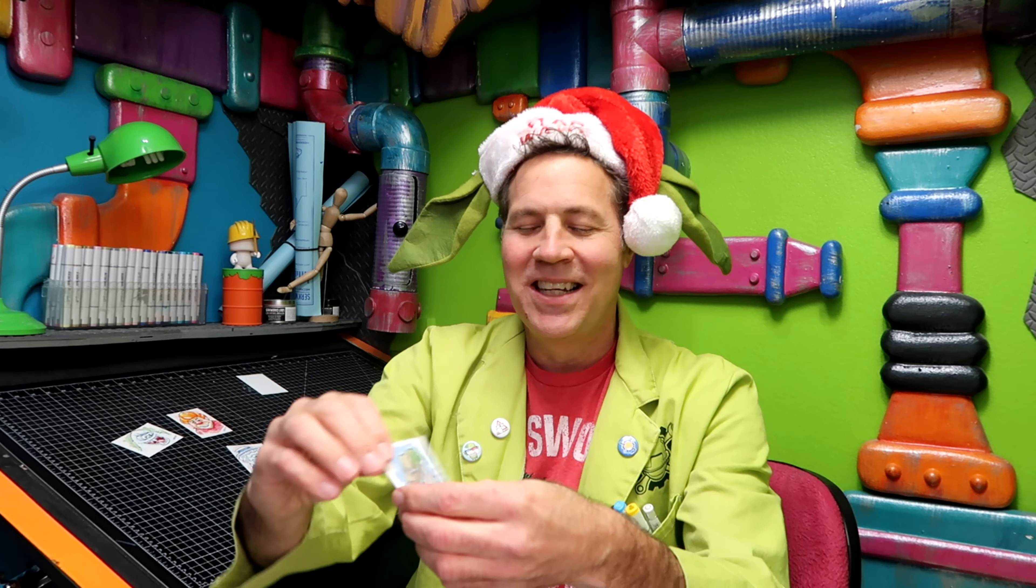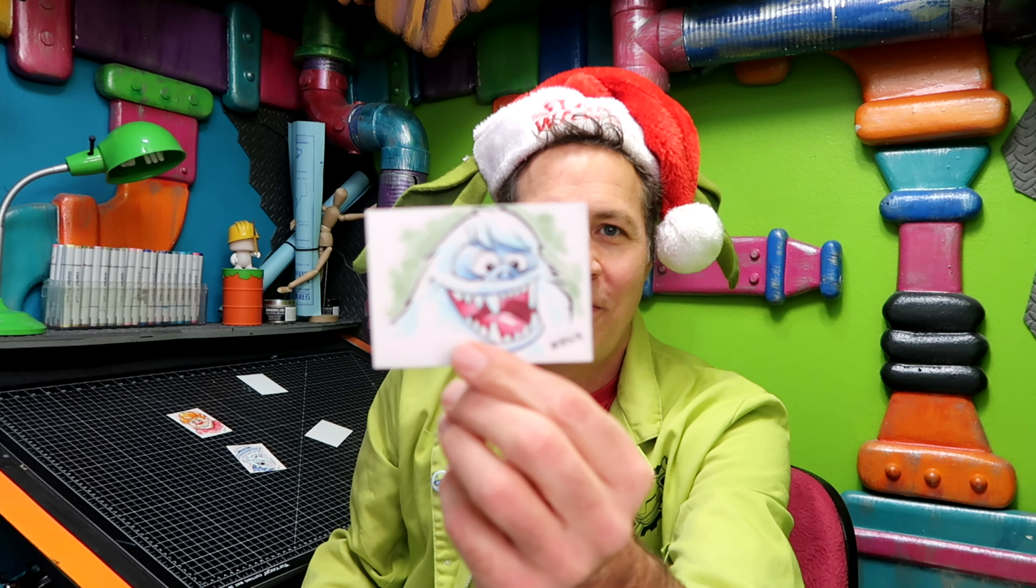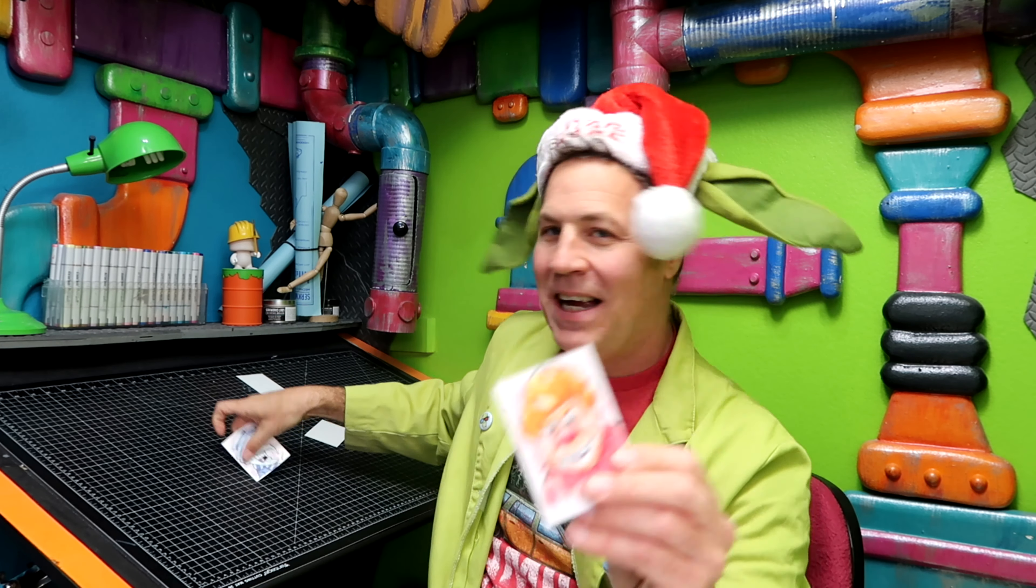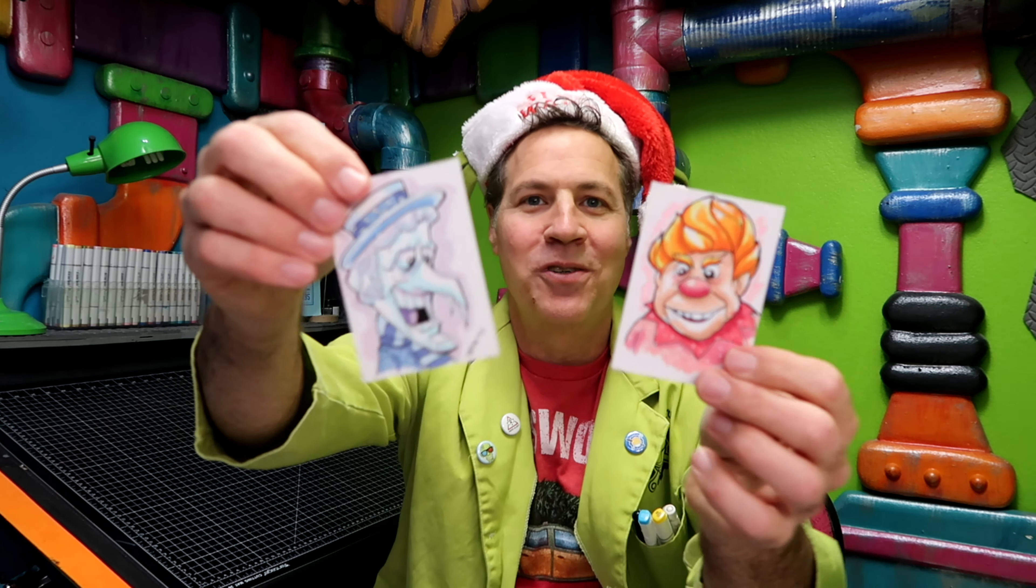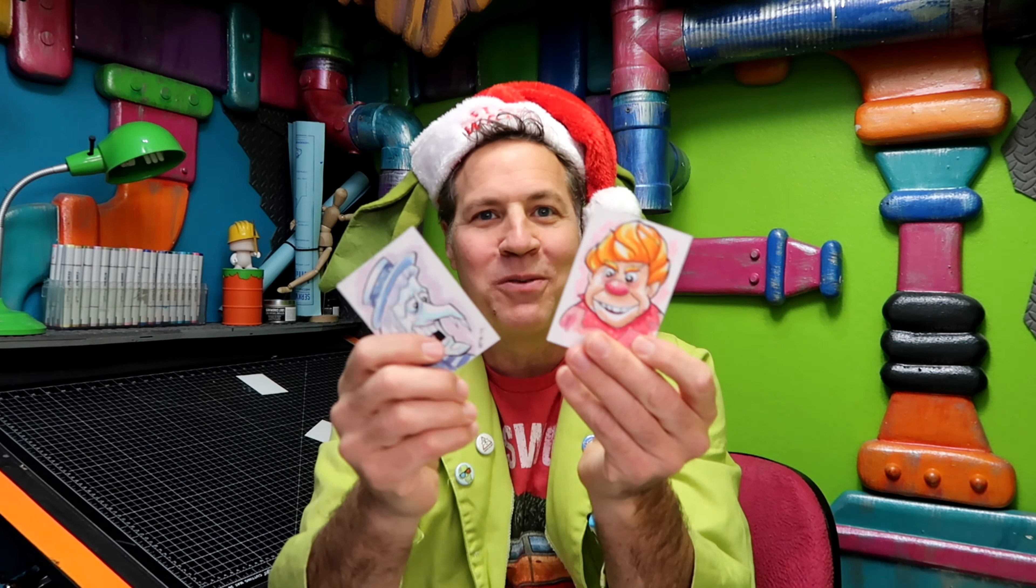Here's Jack Frost. This is the Burgermeister Meisterburger. Of course, one of my favorites, the Bramble Abominable Snowman and Mr. Heatmiser. Is it Mr. Coldmiser or Mr. Snowmiser? I don't remember, but the two Miser brothers. All these guys, I've done these before.